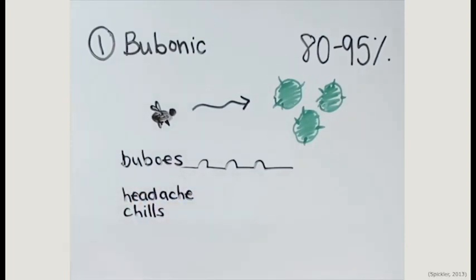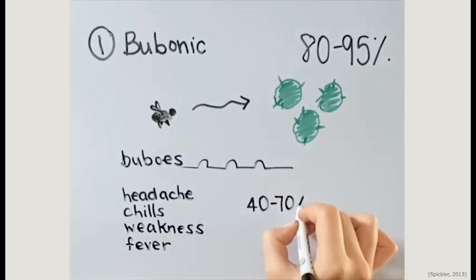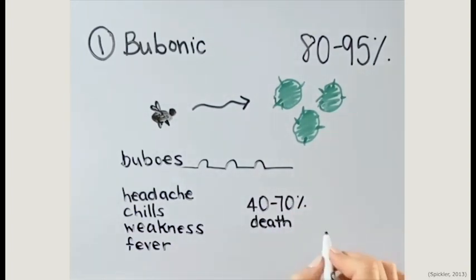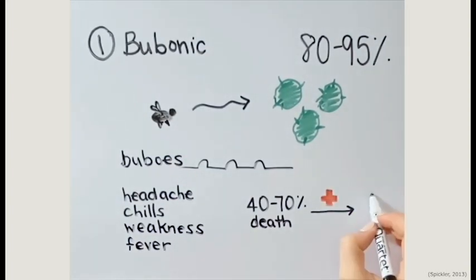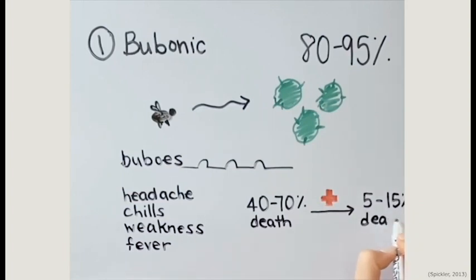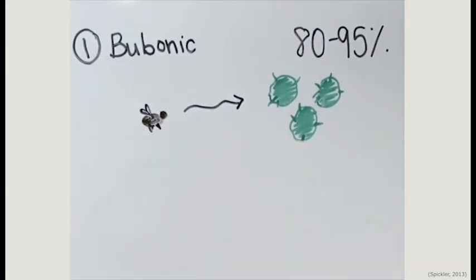Other symptoms linked with the bubonic form of the plague include headaches, chills, weakness, and fever. If this disease is left untreated, there is a 40-70% chance of death. However, with the proper treatment, this rate is significantly decreased and the chance of death lowers to 5-15%.